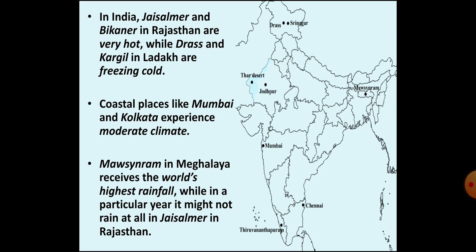There are various factors that affect the climate of a place such as the location, altitude, distance from the sea and relief. As India is a vast land stretching from the Himalayas to the Indian Ocean, it has a wide range of climatic conditions that differ region to region. For example, Jaisalmer and Bikaner in the desert of Rajasthan are very hot; Dras and Kargil in Ladakh are extremely cold; Mumbai and Kolkata or any coastal area have moderate climate. Mawsynram in Meghalaya is the world's highest rainfall-receiving place, while Jaisalmer in Rajasthan may receive no rain at all in a particular year.